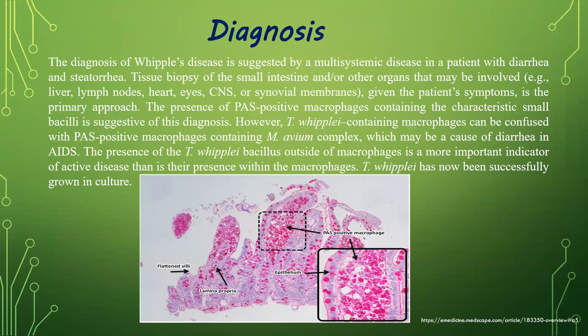The diagnosis is suggested by multi-systemic disease in a patient with diarrhea and steatorrhea. Tissue biopsy of the small intestine and other involved organs is the primary diagnostic approach. The presence of PAS-positive macrophages containing characteristic small bacilli is suggestive for the diagnosis. However, these bacteria-containing macrophages can be confused with PAS-positive macrophages containing Mycobacterium avium complex, which may cause diarrhea in patients with AIDS. The presence of bacilli outside of macrophages is more important in patients with active disease. These bacteria have been successfully grown in cultures.